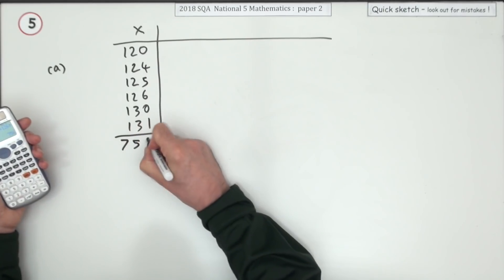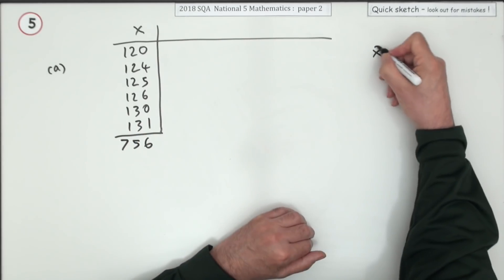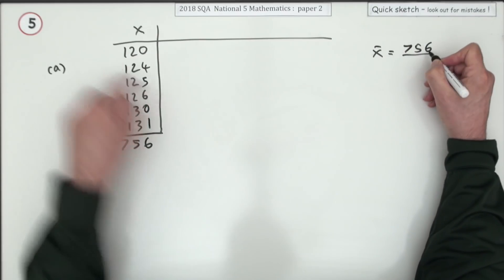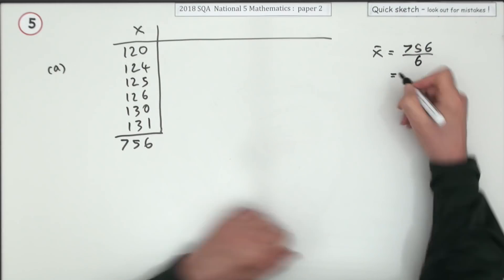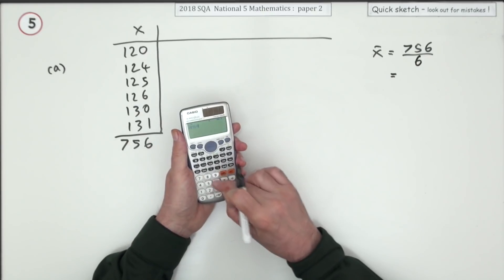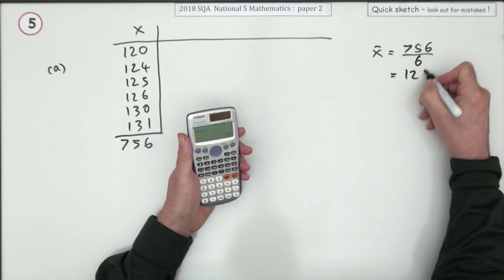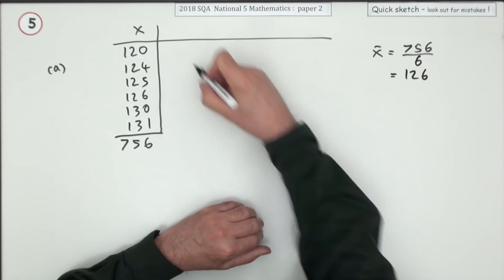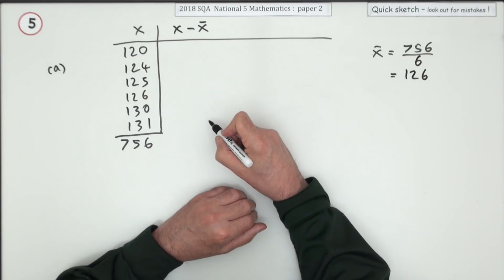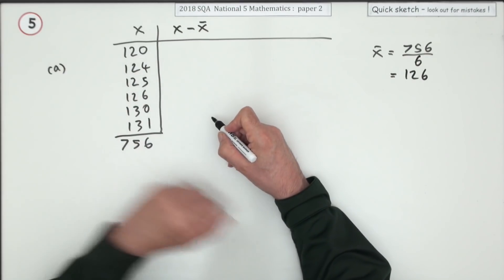To get the total of the X's, which lets me work out the mean. The mean will be 756 divided by six, which is 126.